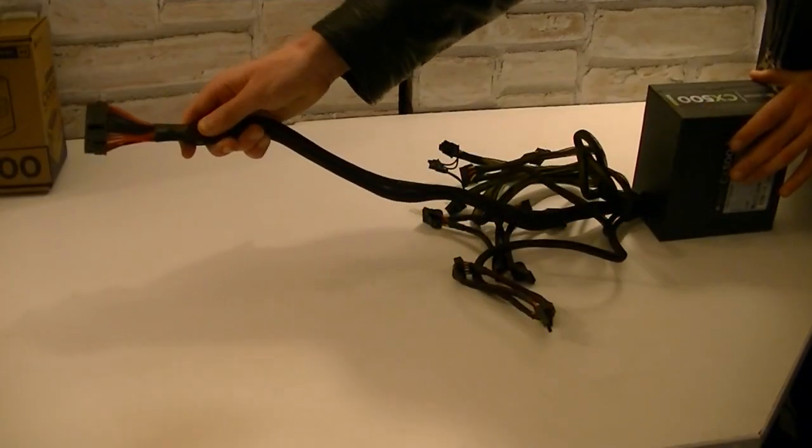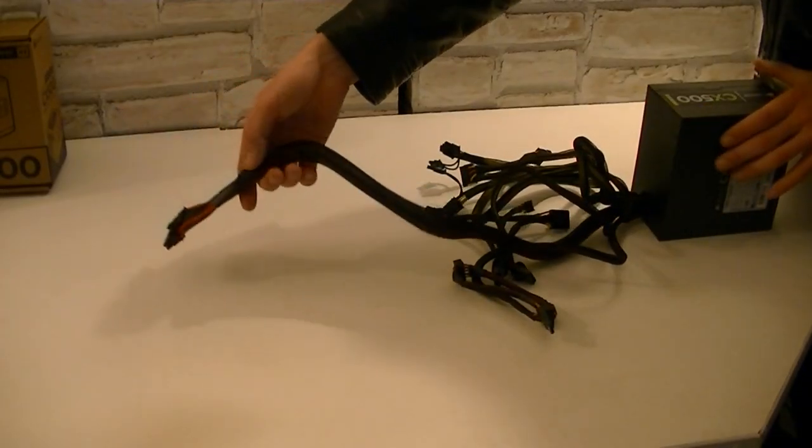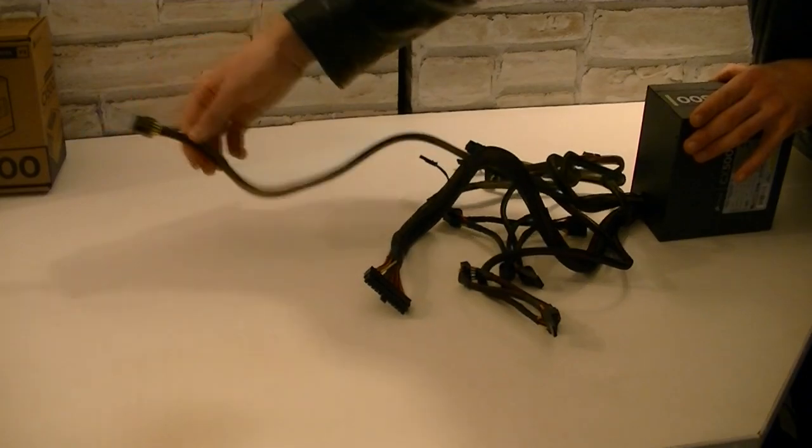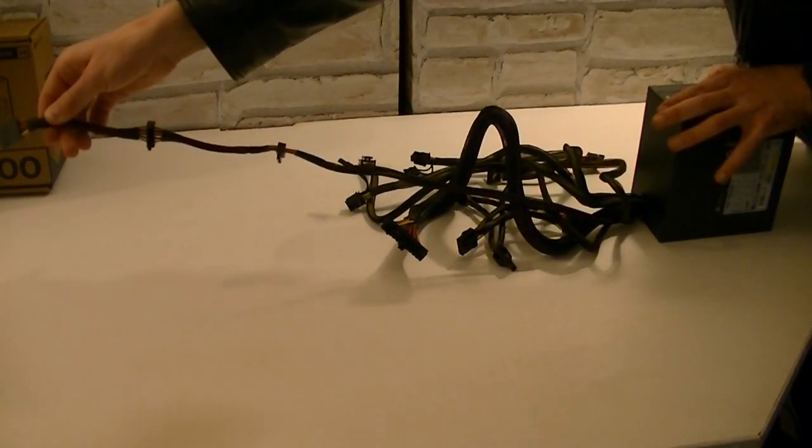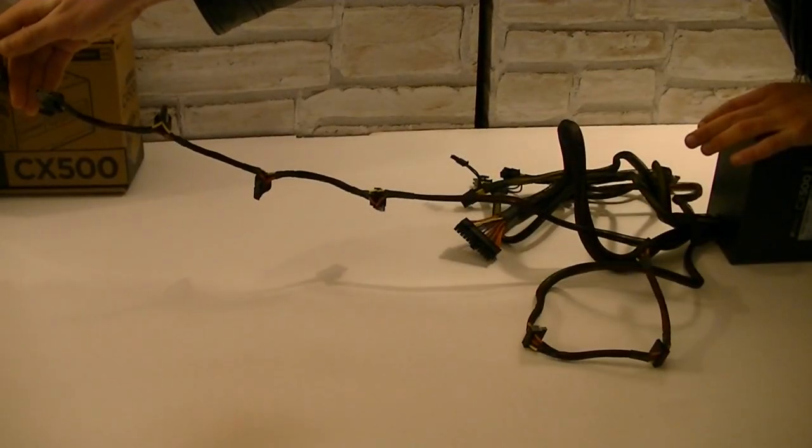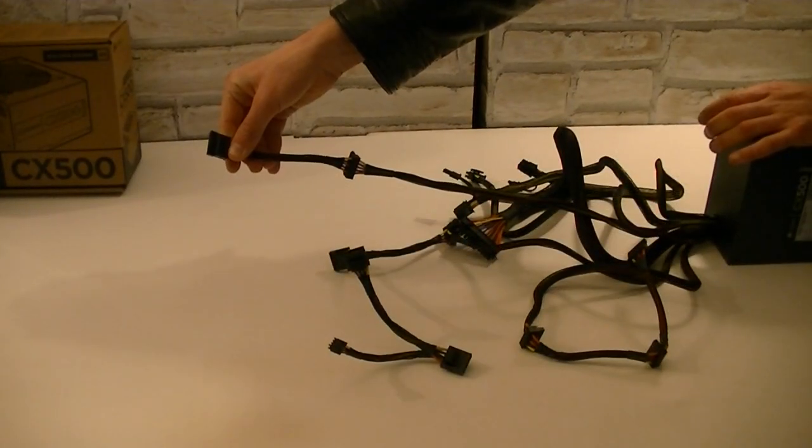Now I would like to show you the length of the cables. Here is the 24 pin connector, here is the 8 pin ATX 12 volt connector, now your PCI Express connectors, also your SATA connectors and molex and floppy connectors, last but not least the two more SATA connectors.